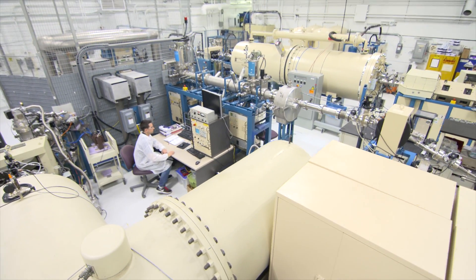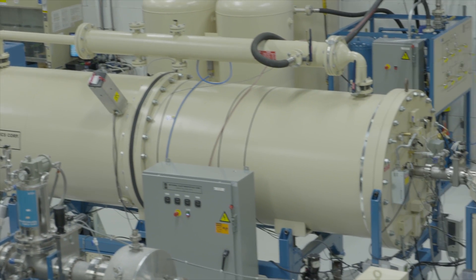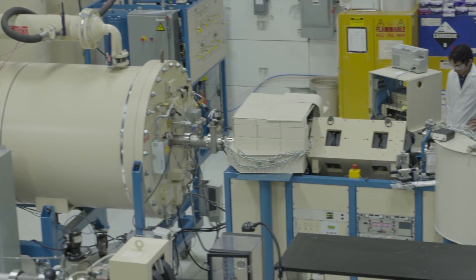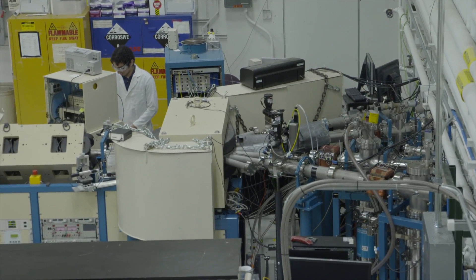The accelerator room houses three accelerators. Wolverine is a 3MV Pelotron tandem accelerator. It is equipped with a high-energy analyzing magnet and four beam lines that couple two target chambers in the target room.